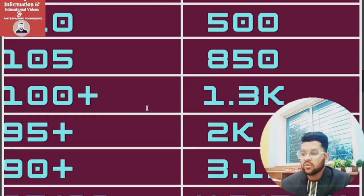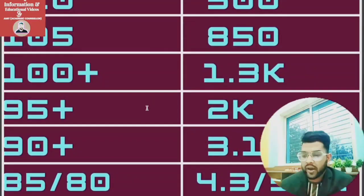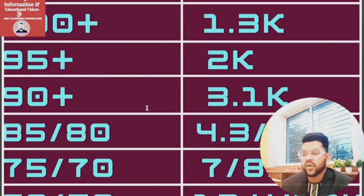Now if you talk about 85 marks, then rank will be around 4,300. For 80, it will be 5,600 or less than that. For 75 and 70, it is 7,000 and 8,500 respectively.